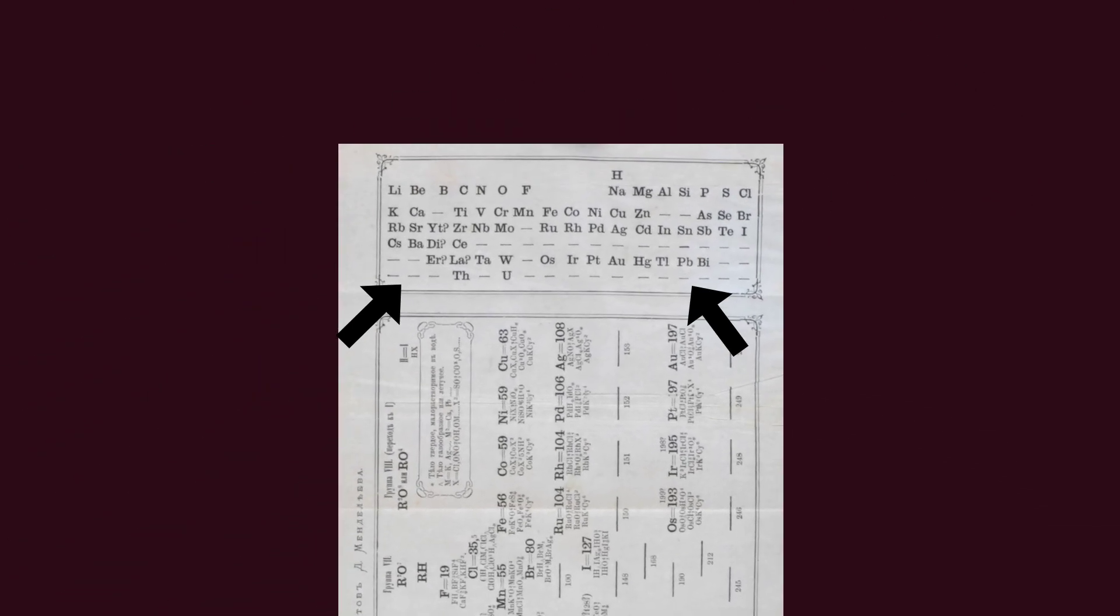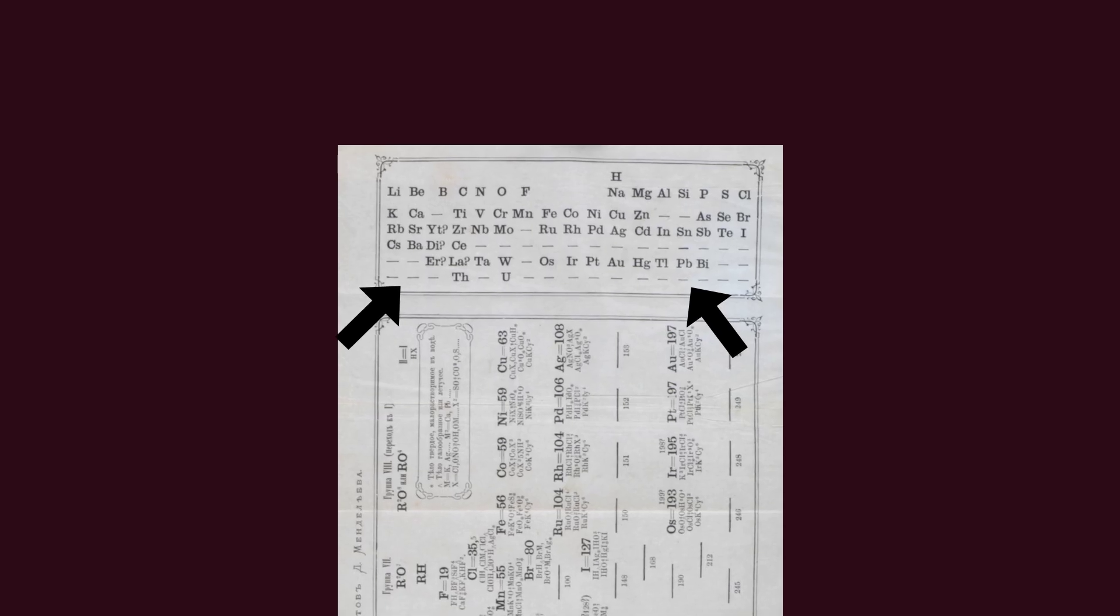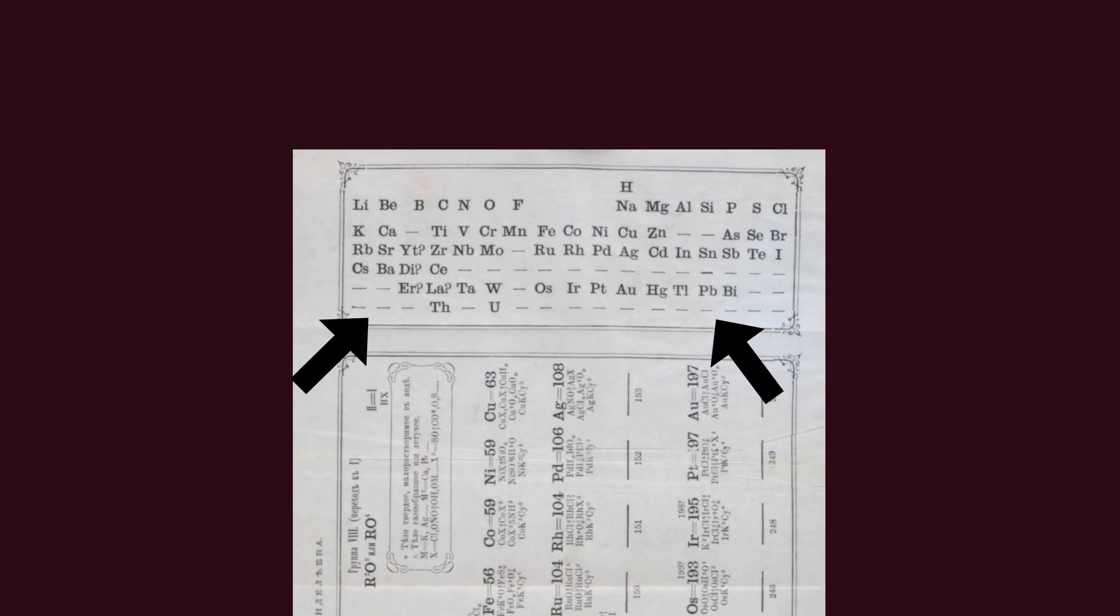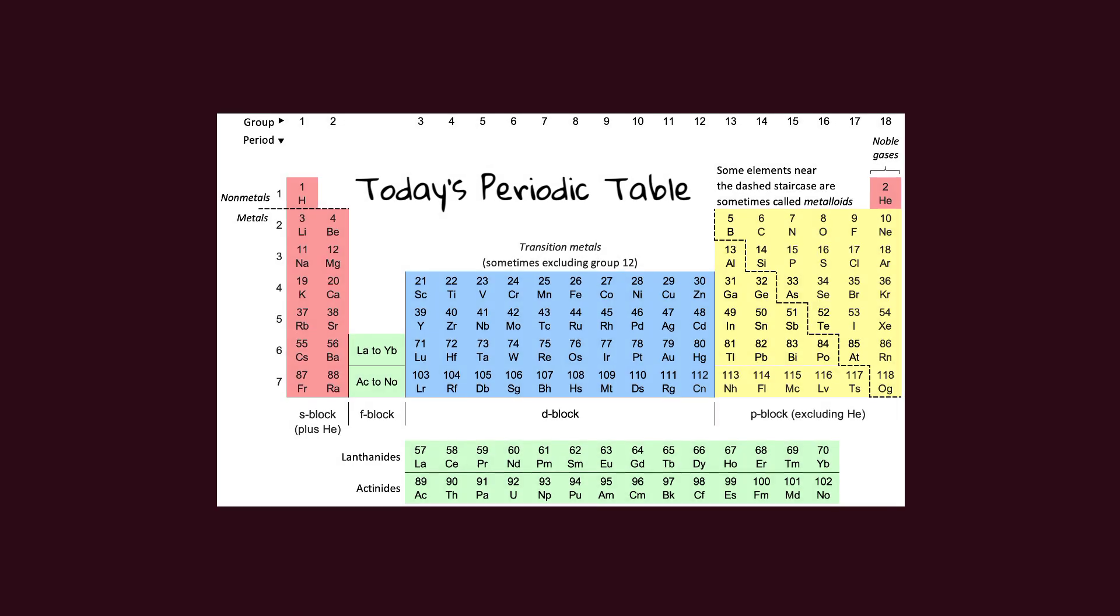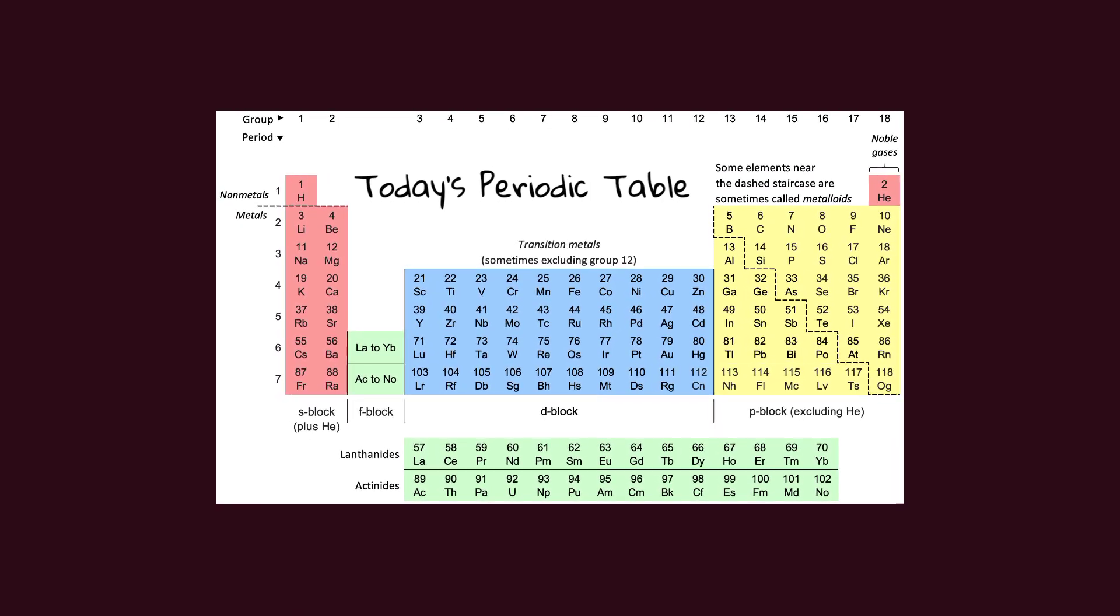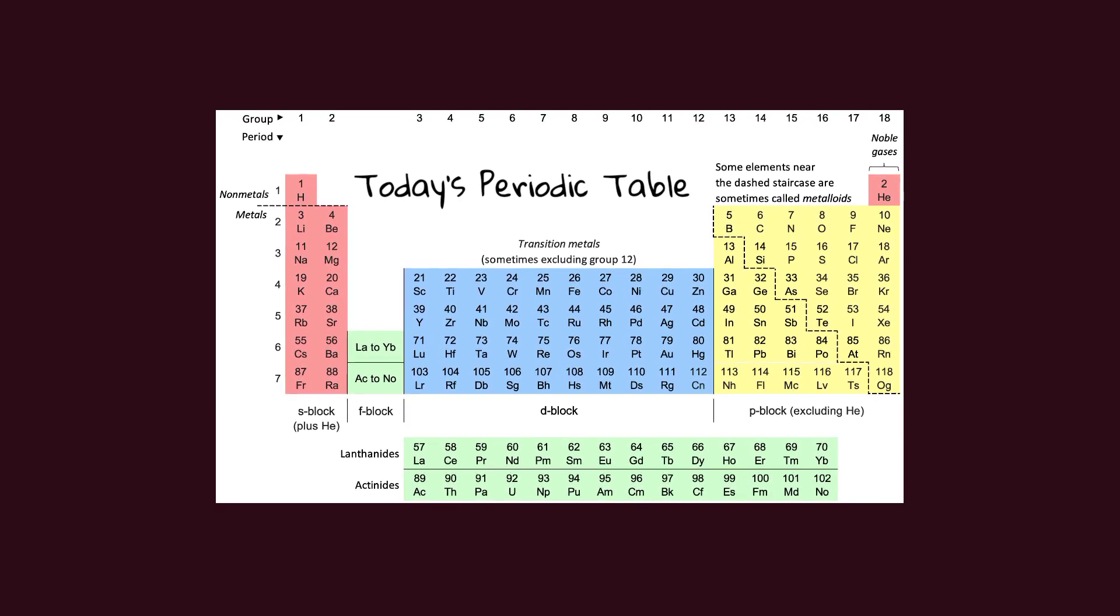For example, he left gaps in his table for elements like eca-aluminum, later discovered as gallium, and eca-silicon, later discovered as germanium. These gaps were like a treasure map for chemists. The periodic table remains the most fundamental guide for chemists even today, showing that elements are not just a random collection, but part of a harmonious and ordered system.